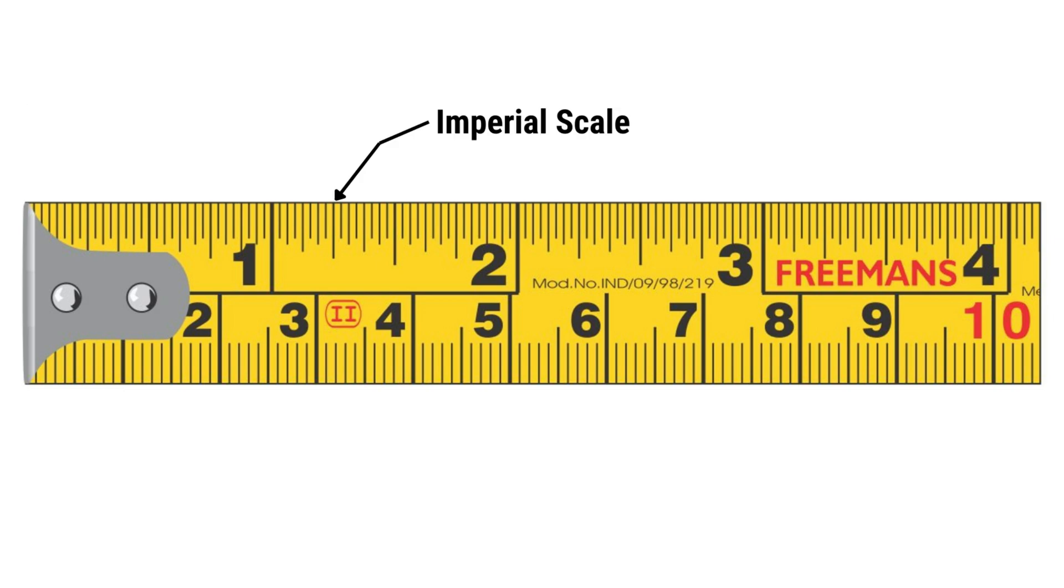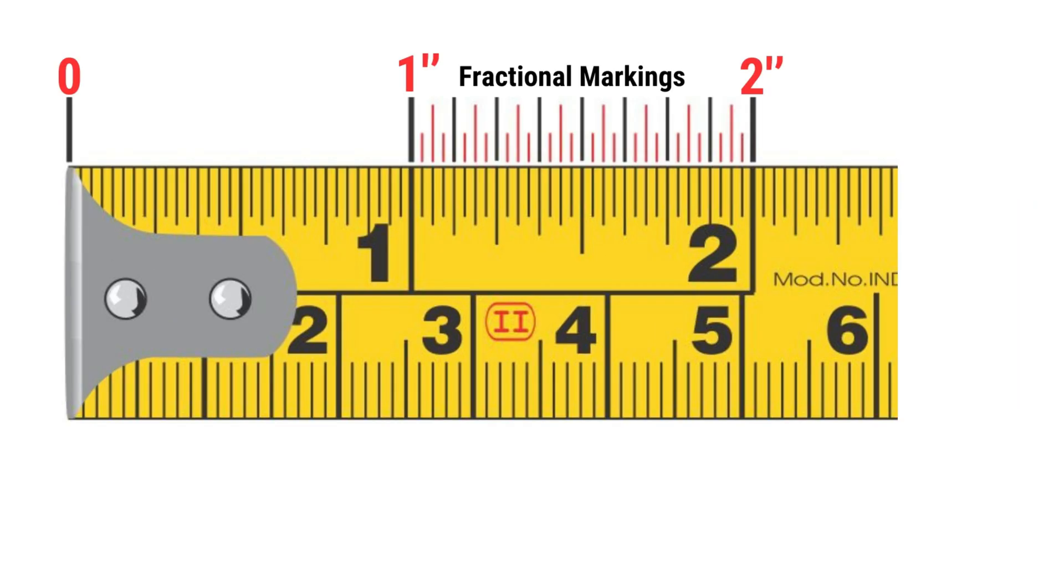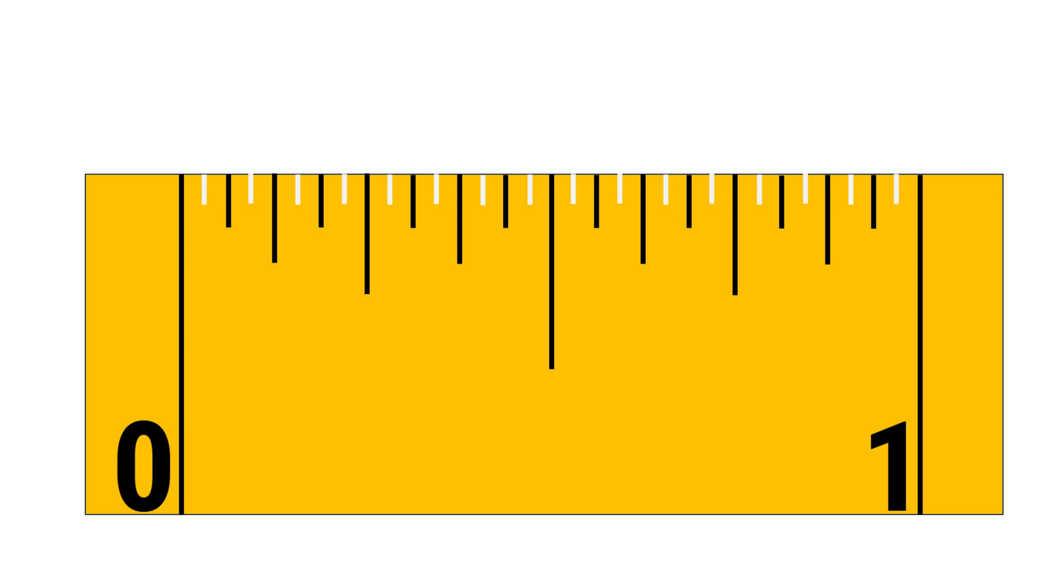Now on the imperial scale, we have inches. Each large number represents a whole inch, while the shorter lines in between are fractional markings. Each inch is broken into fractions. Let's take a closer look at the first section of the tape measure. The distance between the 0 and 1 inch marks represents 1 inch.